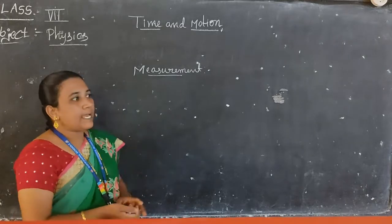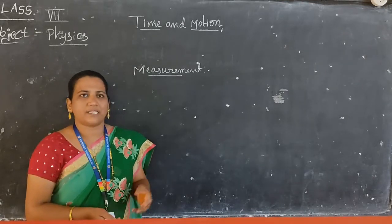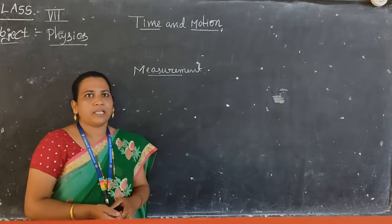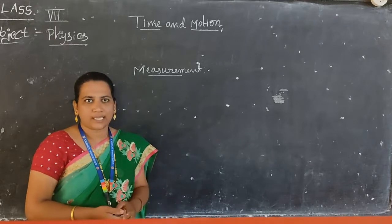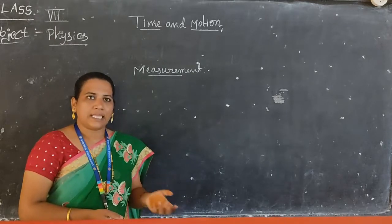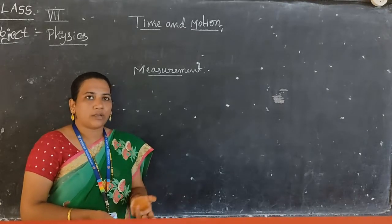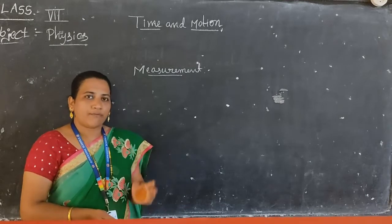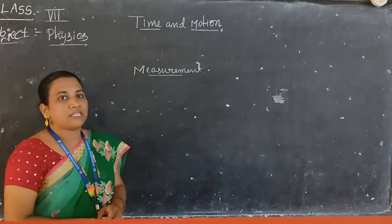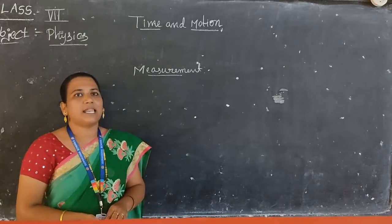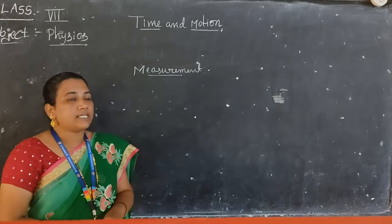In our daily life we come across so many different measurements, like measurement of length, measurement of liquids, measurement of grocery items. For example, if you want to buy sugar, we need to take a measurement. If you want to buy milk or any liquids, we need measurement. If you want to measure cloth, we need measurement. We depend mostly on measurements. All these measurements we are considering as physical quantities.